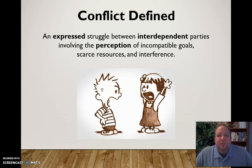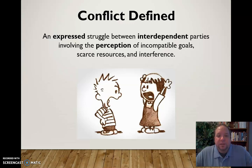Let's look at these couple words that are highlighted. Conflict is an expressed struggle. What we mean by that is that conflict cannot be a secret — it cannot be a one-sided affair. For it to be defined as conflict, both parties have to be aware of it. It has to be expressed between the two parties as a source of disagreement or an issue. If it's just one person that is aware, it's not a conflict.